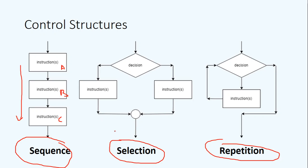That is what we call the sequence structure, meaning a program consists of a sequence of instructions. Moving on, we have another kind of control structure called selection. In the flowchart, there is a diamond shape where you make some decisions. Depending on the result of the decision, it will lead you to different paths, and different paths consist of different instructions. Typically, the decision block has yes/no or true/false directions.